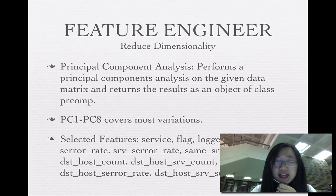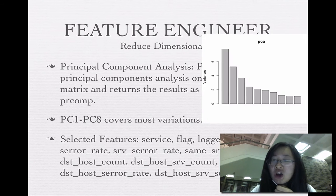And then I reduce the dimensionality using principal component analysis method. Principal component analysis performs a principal component analysis on the given data matrix and returns the results as object of class. We can see from this picture that it shows a relationship between the principal components and the variance. Principal components 1 to principal components 8 covers most of variations.